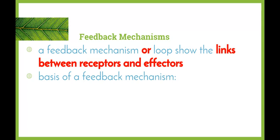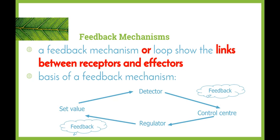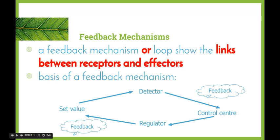A feedback mechanism or feedback loop shows the links between receptors and effectors. This picture shows a basic skeleton framework of a feedback mechanism: we have our set value, which is detected by our receptors; the message goes to the control center; our regulators bring about the change; and we bring it back to our set value. This continues until the set value brings us back to homeostasis.